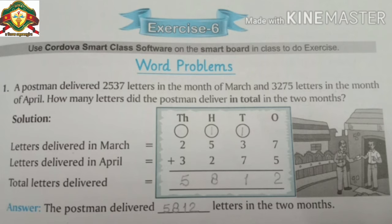Now add them. आप इन सबको add करिए, और add करने के बाद आप answer लिखेंगे। Answer में देखिए, यहाँ space दिया हुआ है, blank छोड़ा हुआ है। So जो आपका right answer होगा, वो आप यहाँ लिखेंगे। And this exercise also do in your book.